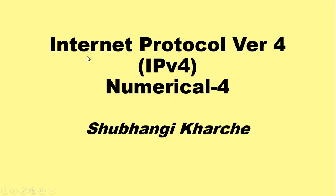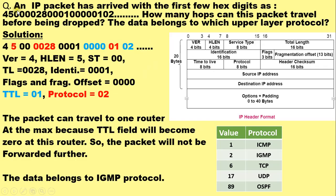In this video I am going to explain a numerical on Internet Protocol version 4 which will illustrate the use of TTL and protocol fields of the IPv4 header. The example is: an IP packet has arrived with the first few hex digits as 45 00 00 28 00 01 — and so on. We are given the hexadecimal dump of an IP packet.